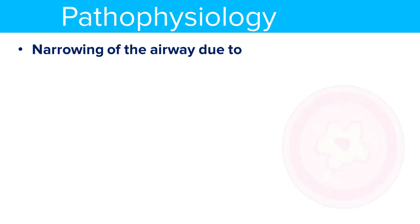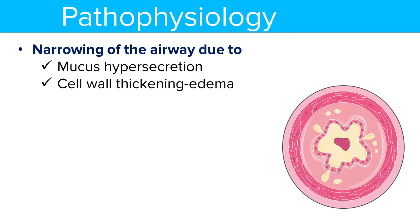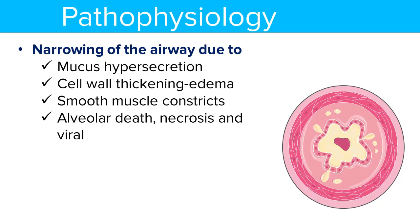In about 1 to 3 days after infection, there is a narrowing of airways due to excessive mucus production, which occurs as a result of hyperproliferation of goblet cells. Cellular thickening occurs and edema develops because of excessive regeneration of epithelial cells. Smooth muscle constricts, narrowing the airway. Alveolar necrosis and viral invasion causing edema leads to airway narrowing and constriction of the lumen.